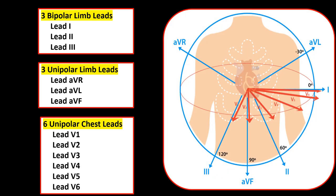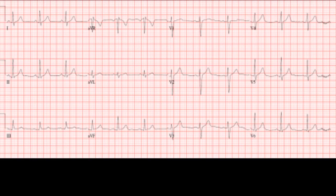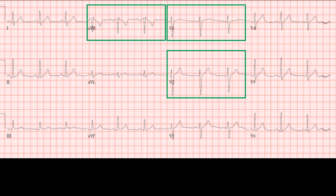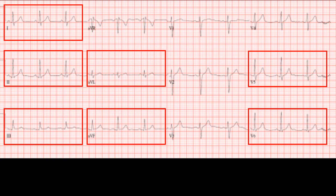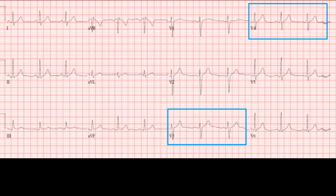Again, we have three bipolar limb leads, three unipolar limb leads, and six unipolar chest leads. Combining all 12 leads, you see this plot. After performing a 12-lead ECG, you see this normal ECG tracing. Why are some leads inverted, some are upright, and some have equal positive and negative deflections?